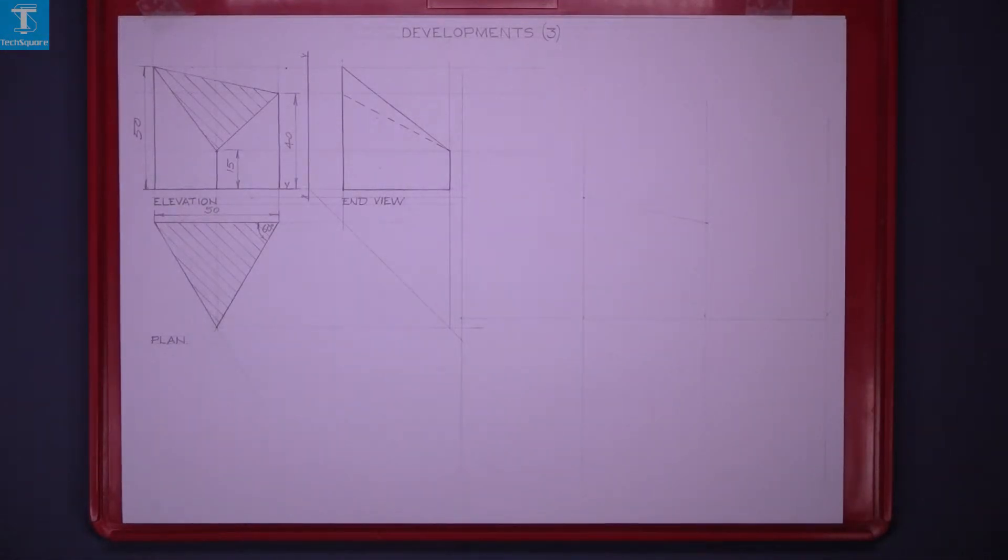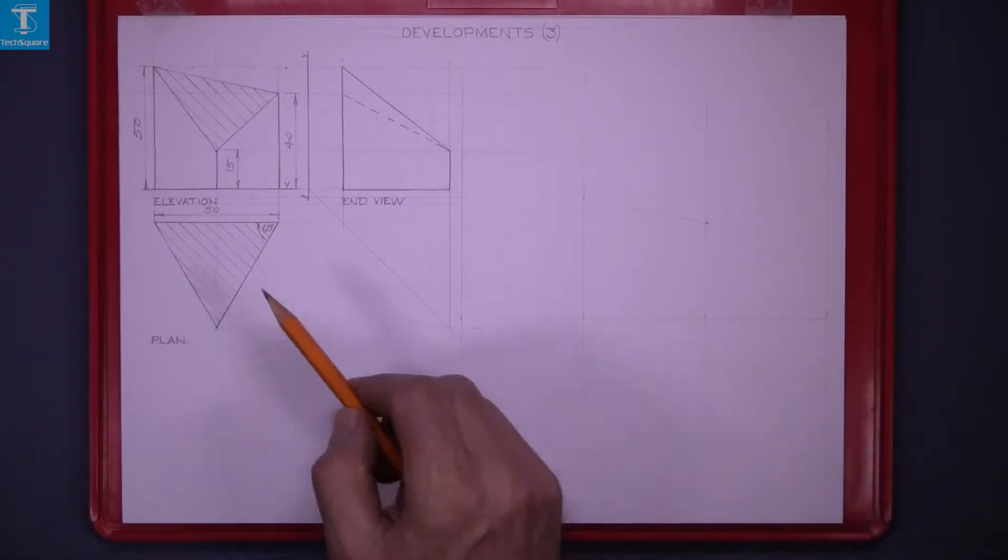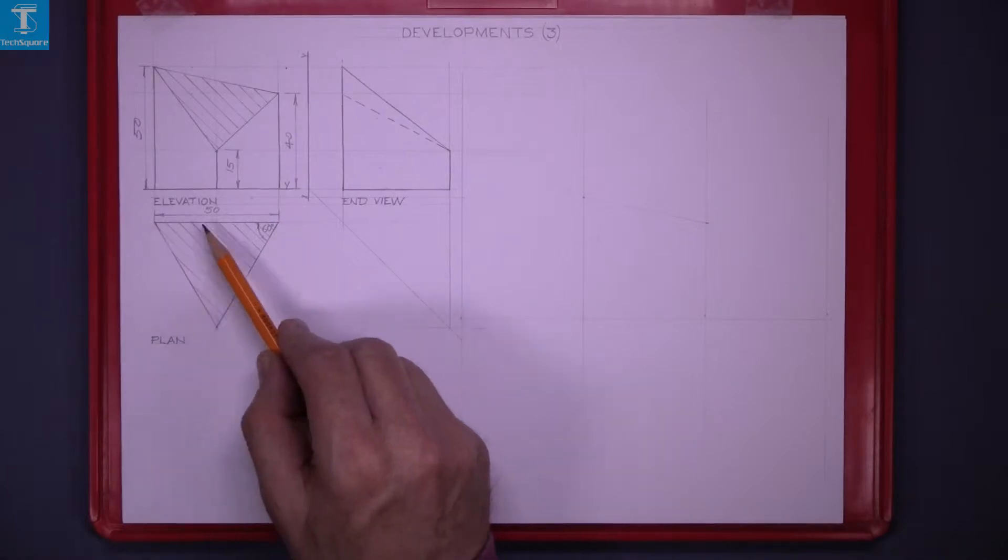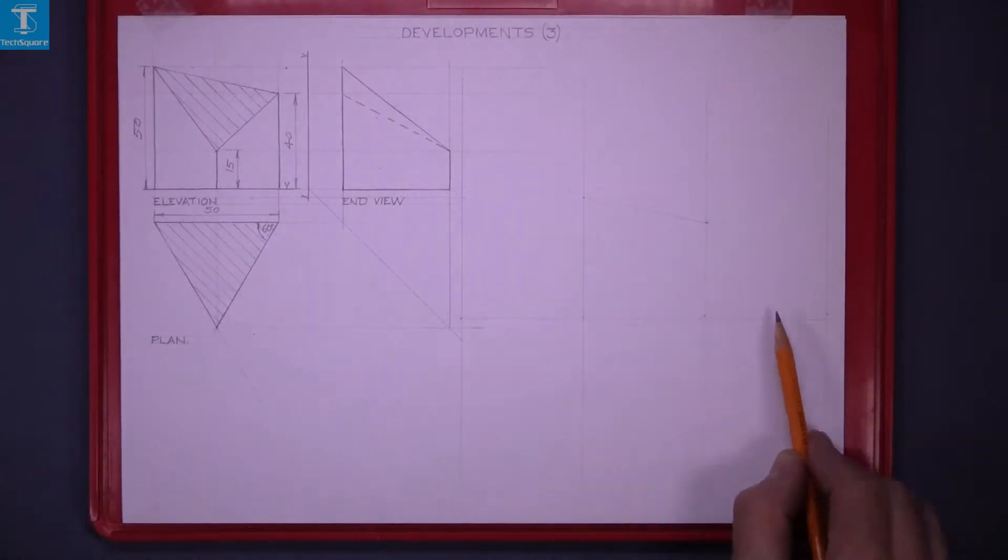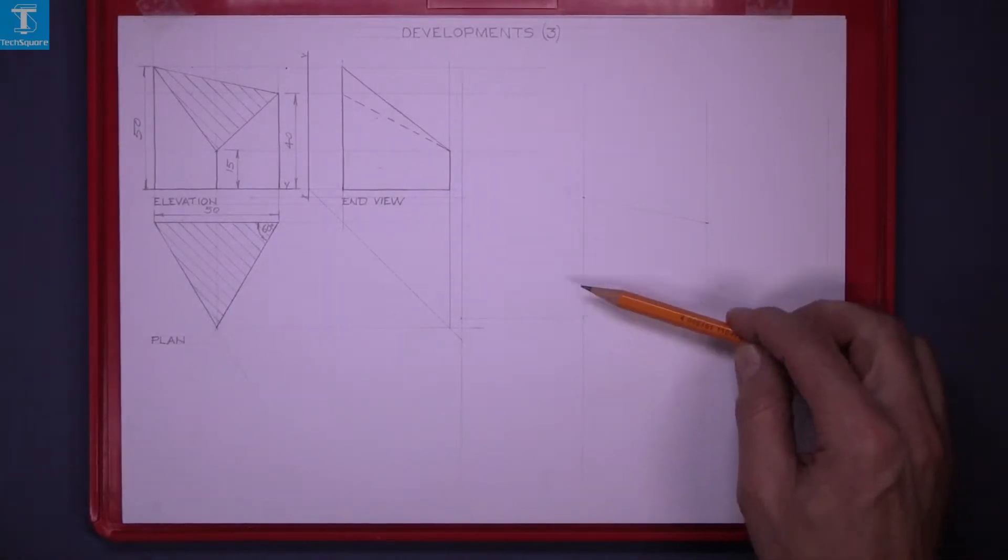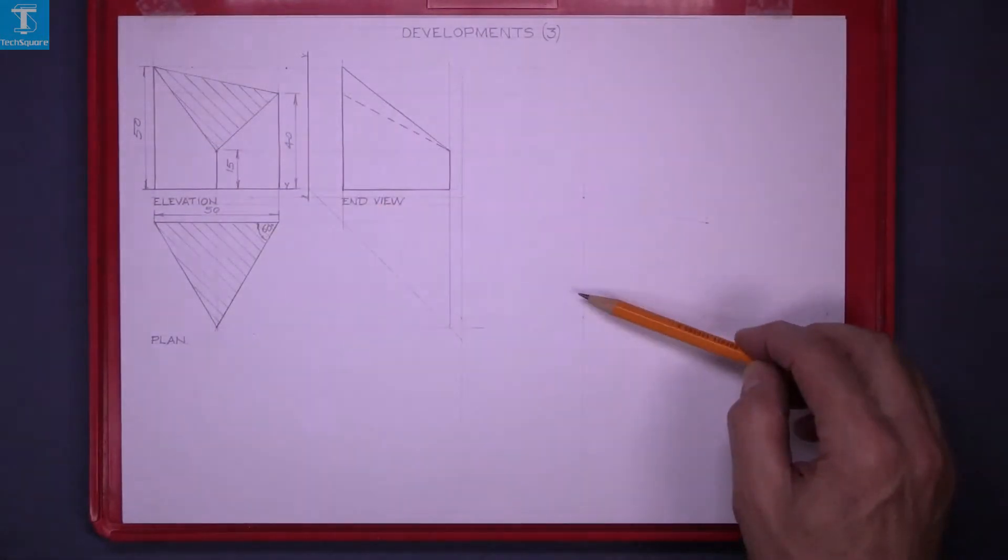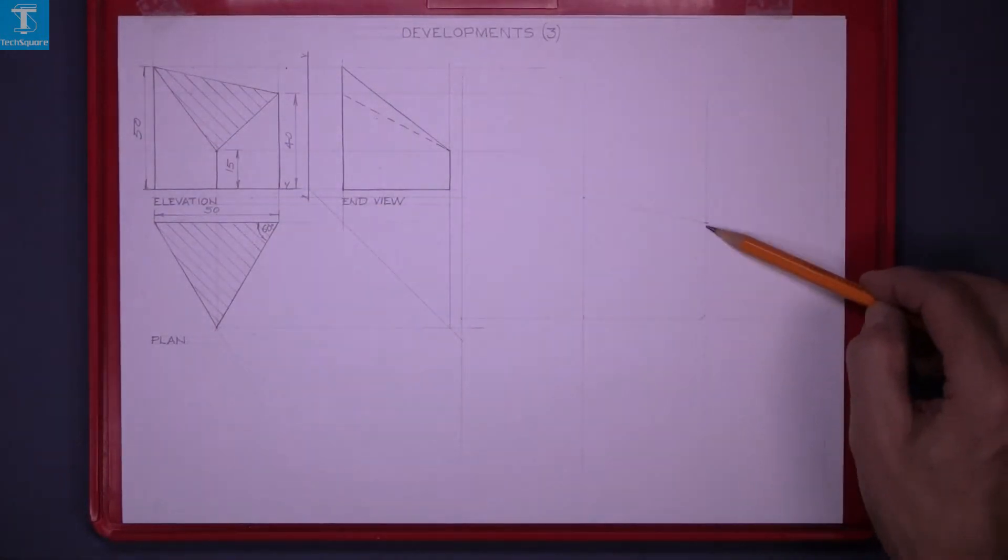To do that I have marked out the length of the side 50 three times along there and marked the height of this side 50 and this other side is 40.